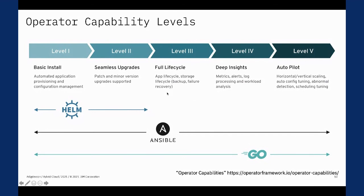The five levels represent maturity and capability, and they are cumulative — a level three operator can also do levels one and two. Level one: the operator can install the operand. Level two: it can upgrade the operand to a new version. Level three: it manages the full life cycle, including backups and failure recovery. Level four: it gathers metrics and ensures the operand is running correctly. Level five (autopilot): horizontal and vertical scaling, detecting abnormalities, and scheduling. When writing an operator, you start at level one and add higher levels over time.